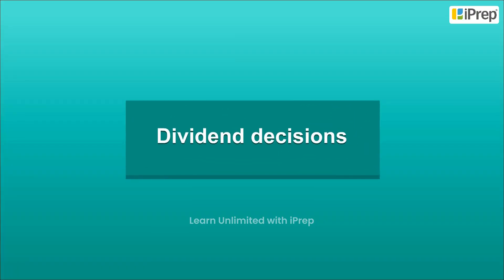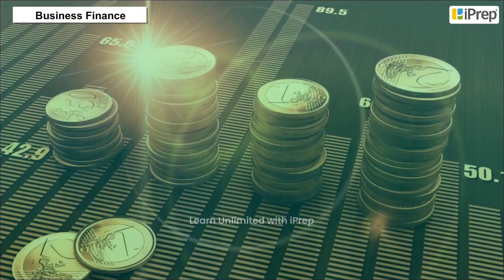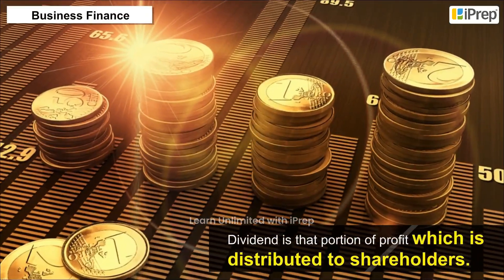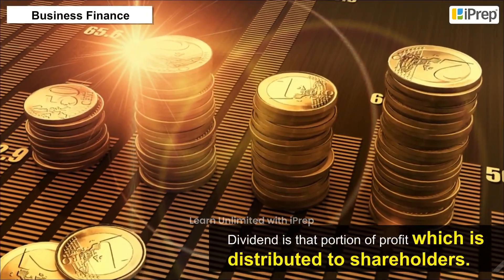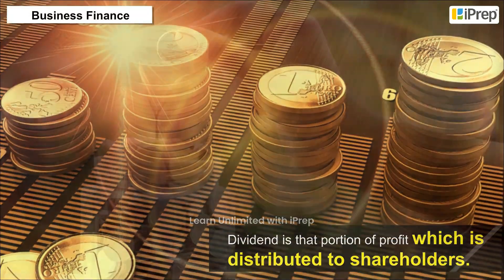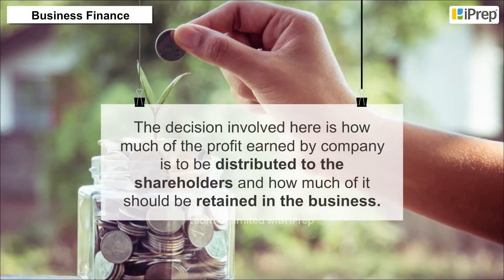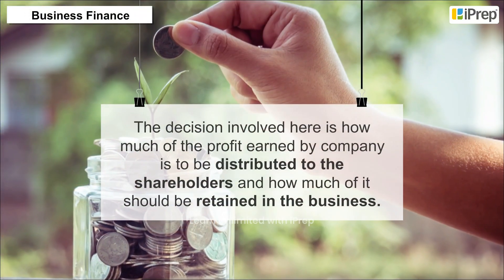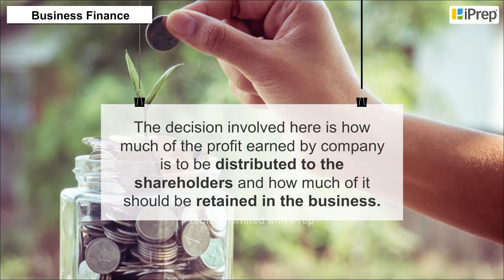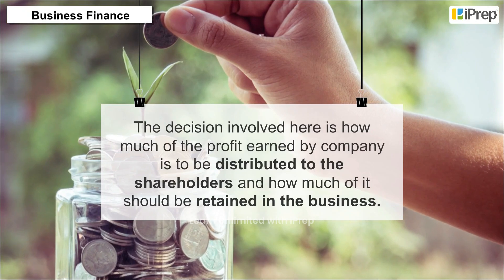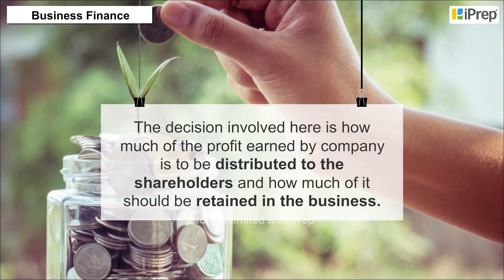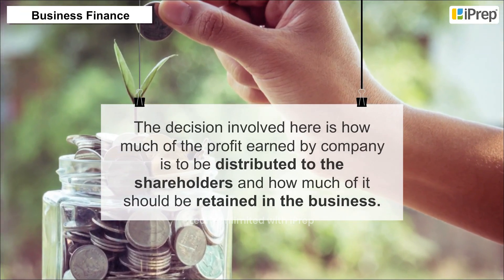Dividend decisions: a dividend is that portion of profit which is distributed to shareholders. The decision involved here is how much of the profit earned by the company is to be distributed to the shareholders and how much of it should be retained in the business.